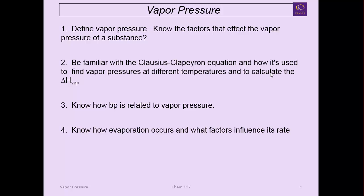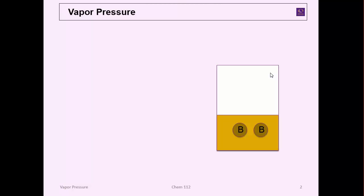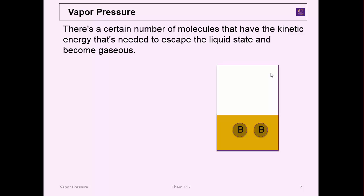Today I would like to talk about vapor pressure. Vapor pressure can be thought about as we look at this little batch of liquid of some material B. There's a certain number of molecules that have enough kinetic energy, i.e. temperature, that they can escape the liquid state and become gaseous.